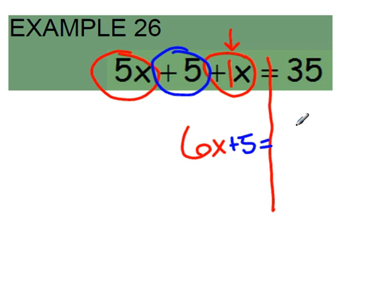On the right side we just have a 35, it's already simplified so we just bring that down.